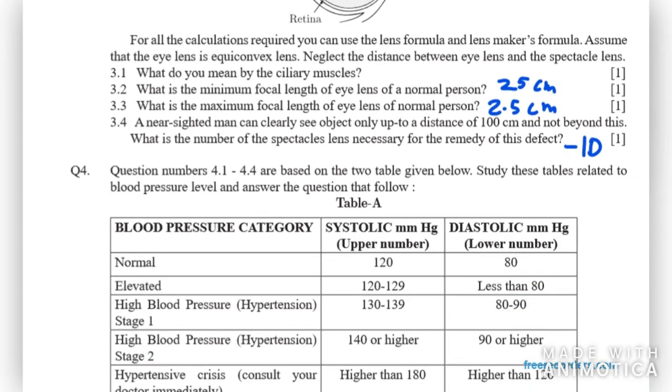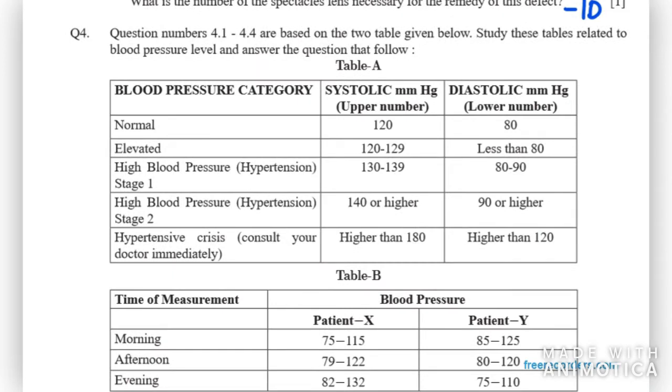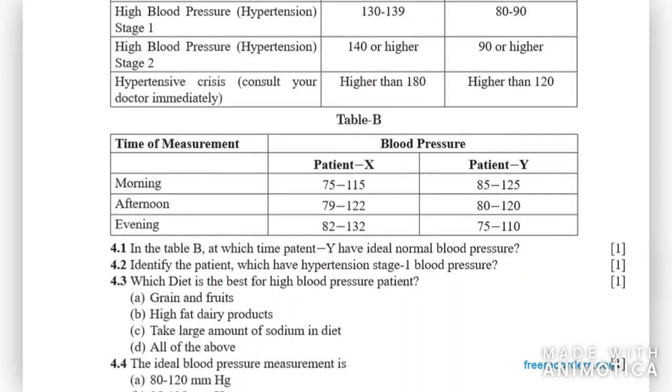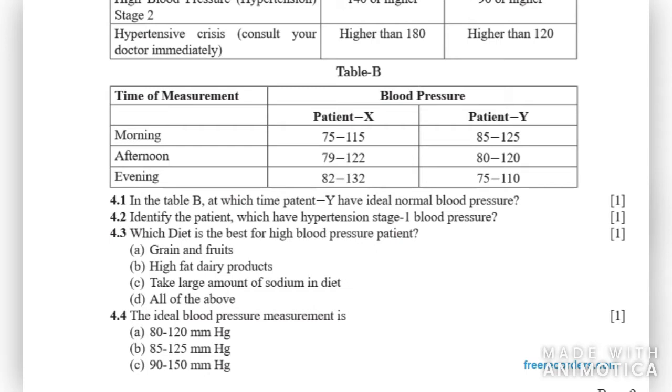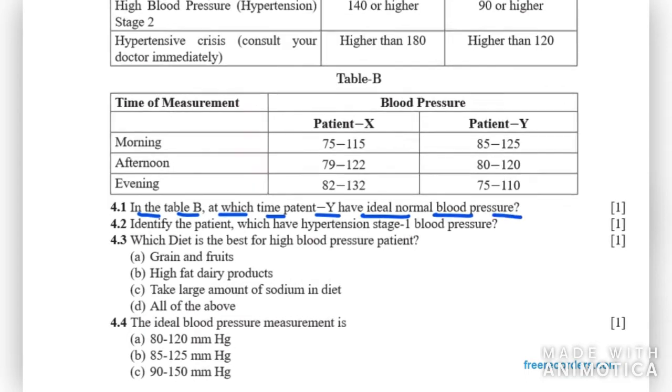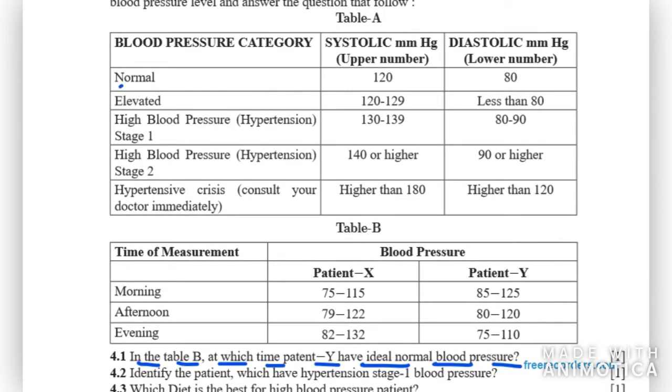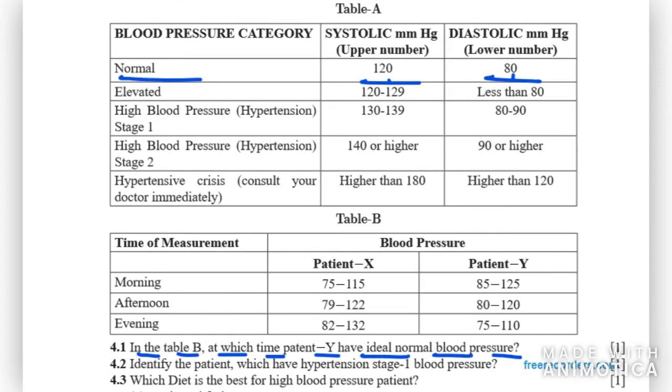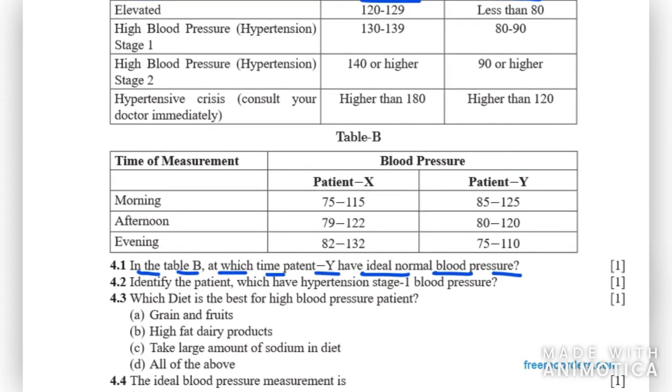Moving on to question number 4. Here we have some study related to tables. You are given tables A and B, and you have to answer questions based on these tables. Question 1 says: in table B, at which time does patient Y have ideal normal blood pressure? Ideal normal blood pressure is 120/80. Upper number should be 120 and lower number should be 80. You can see it is 80-120 at afternoon. So you have to write at afternoon.